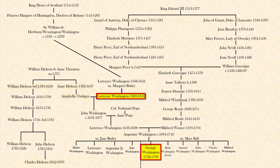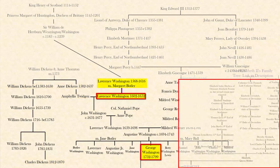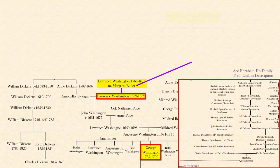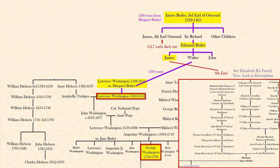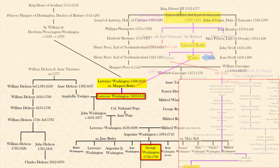Lawrence's own mother was Margaret Butler, who was part of the powerful Butler family and a direct descendant of James Butler, the third Earl of Ormond, about 200 years prior. The Earl's second son was Richard, who had Edmund, and Edmund had James, Walter, and John. James's line goes directly down to Elizabeth Butler and ultimately the Bowes-Lyon family, which is Queen Elizabeth's mother's line. The second son, Walter, goes directly to Margaret, who was Lawrence's mom.